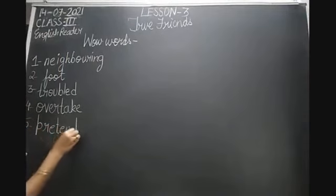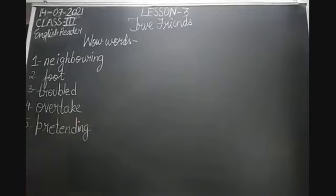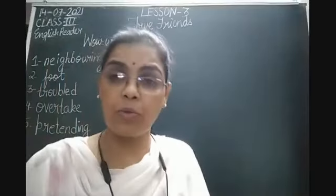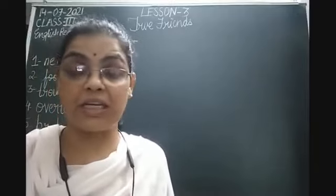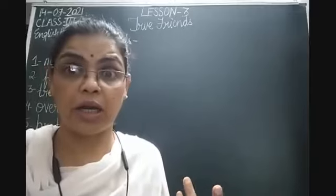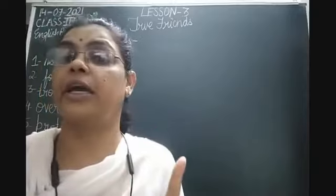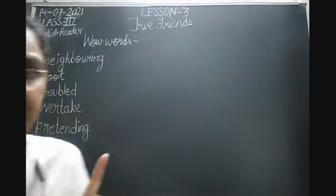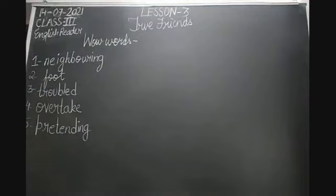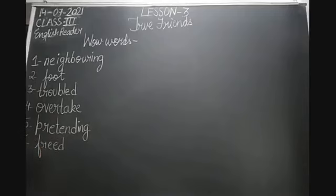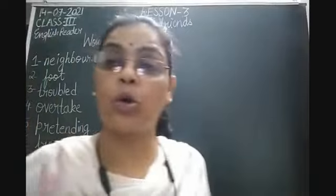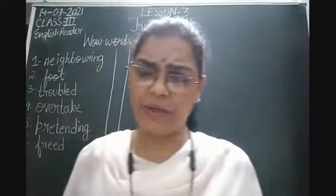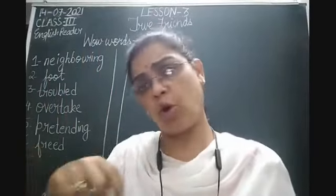The fifth word is 'pretending' — P-R-E-T-E-N-D-I-N-G. Pretending means showing fake behavior. Kabhi kabhi school jaane ka mann nahi karta, toh hum bolte hain meri tabiyat theek nahi hai, jabki we are perfectly all right — that is pretending, natak karna. The sixth word is 'freed' — F-R-E-E-D. Freed means to set free, azaad karna. For example, if someone keeps a bird in a cage and then opens it, they have freed the bird.